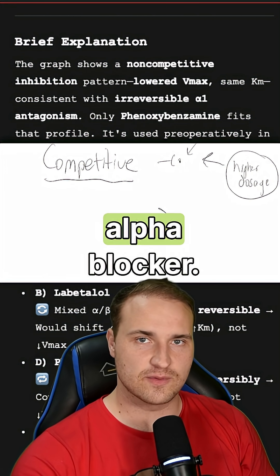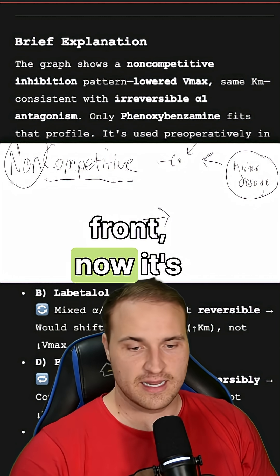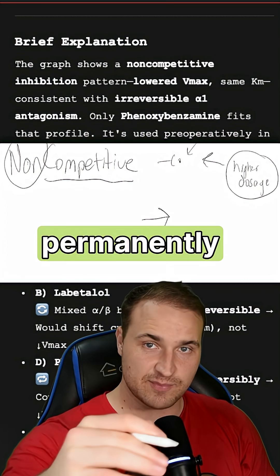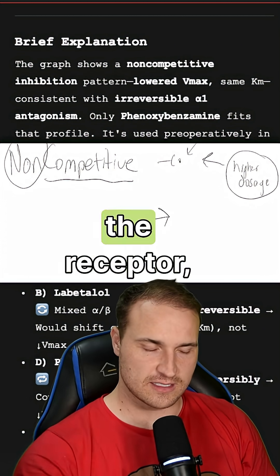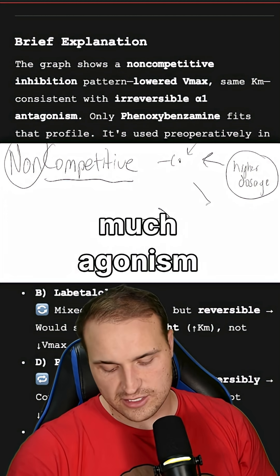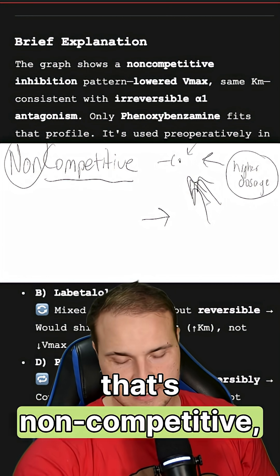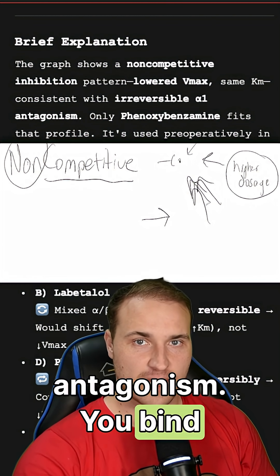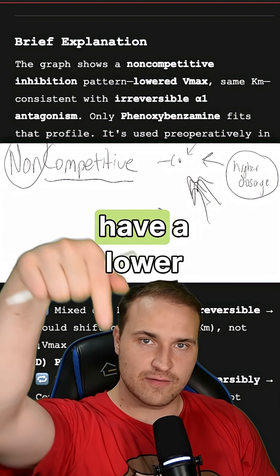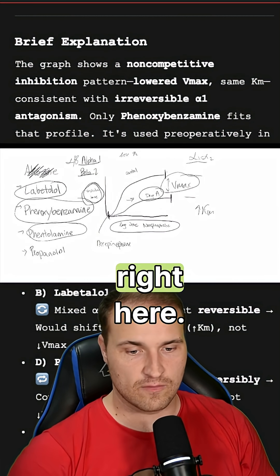Phentolamine is a reversible alpha blocker — that's competitive. However, if you add 'non' in front, now it's non-competitive. That's like gluing the door shut. It binds permanently, or it binds somewhere else on the receptor, which is called an allosteric interaction. It doesn't matter how much agonism you throw at it — the effect is just going to be blunted. So non-competitive means irreversible antagonism: you bind permanently or allosterically and cannot be out-competed. That graph would have a lower Vmax, but the KM stays the same, which is what we saw in our graph.